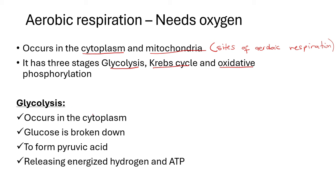You should explain glycolysis exactly as written here if you want to get full marks. Glycolysis occurs in the cytoplasm. If the question asks what is the site for glycolysis, you say the cytoplasm. During glycolysis, glucose is broken down. The main aim of cellular respiration is to break down glucose so that it can release energy. What we form is known as pyruvic acid — when we break down glucose we form pyruvic acid. During that process there is a release of energized hydrogen as well as ATP, which is the energy we are talking about.